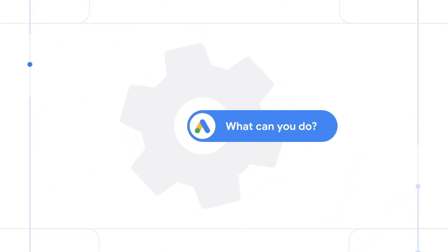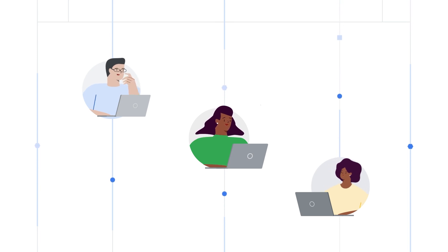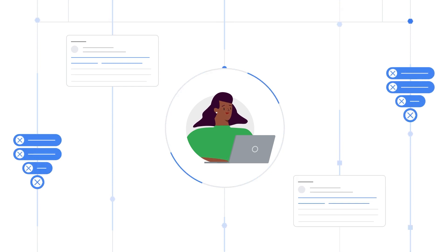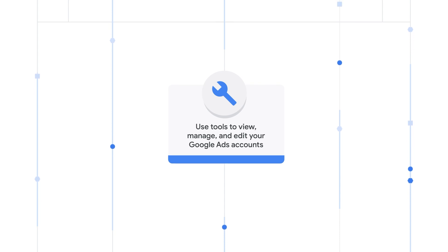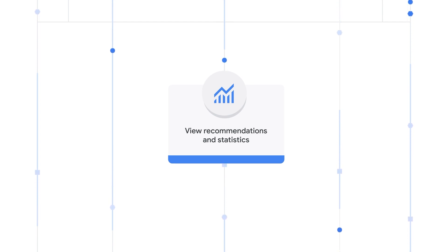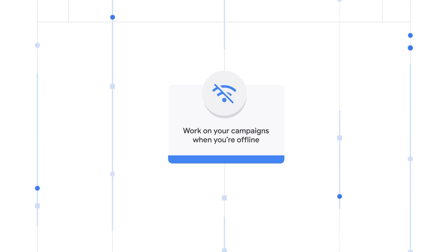What can you do with Google Ads Editor? Any advertiser with any size account can use Google Ads Editor, but it's especially useful for accounts with multiple campaigns and long lists of keywords or ads. For example, you can use tools to view, manage, and edit across multiple accounts in bulk, view recommendations and statistics that provide insights into the performance of your accounts, and optimize your campaigns at scale. Export and import files to share proposals or make changes to an account. Work on your campaigns when you're offline or on the go and post them to your account only when you're ready.